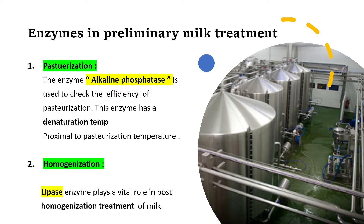In homogenization, fat globules are evenly distributed across the entire milk sample. When fat globules are broken into smaller particles, the surface area increases. The lipase enzyme naturally present in milk starts acting on the naked surface of the fat globules, breaking fat down into glycerol and fatty acids, which can lead to rancid flavor. So we need to keep a check on lipase activity, which is why it plays an important role in preliminary milk treatment.